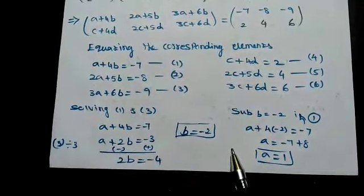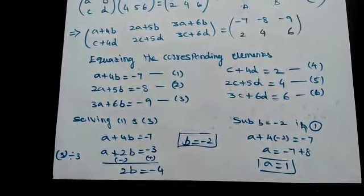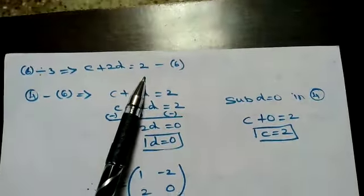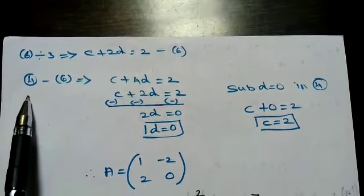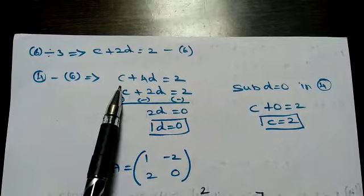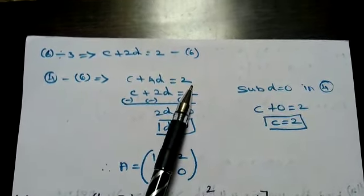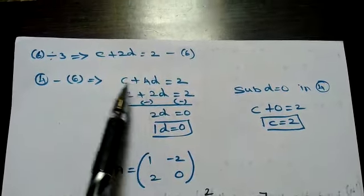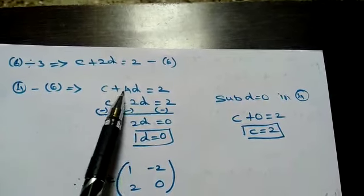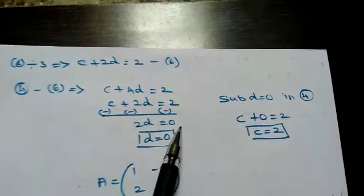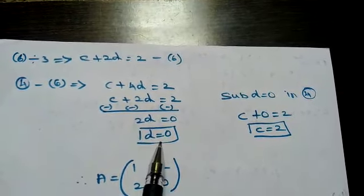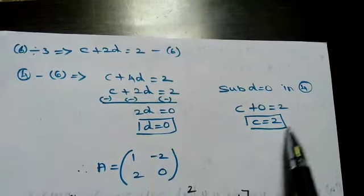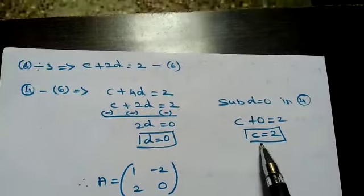Next, find c and d from equations 4 and 6. Divide equation 6 by 3 to get c+2d = 2. Subtract this from equation 4 (c+4d = 2): c cancels, giving 2d = 0, so d = 0. Substitute d = 0 into equation 4: c + 0 = 2, so c = 2.